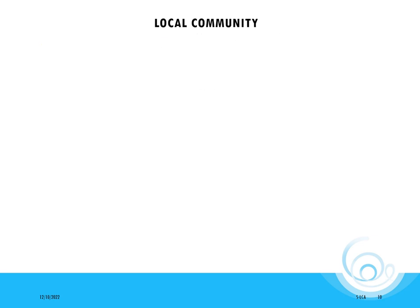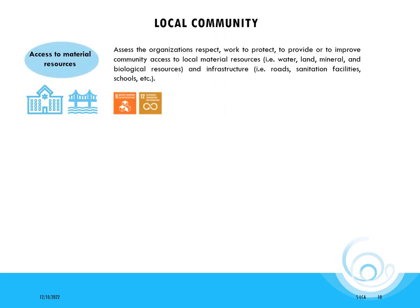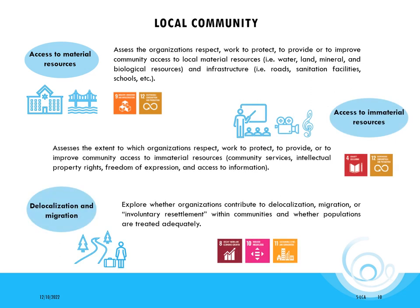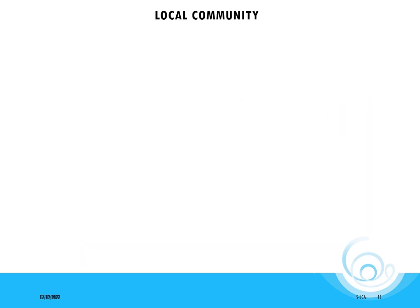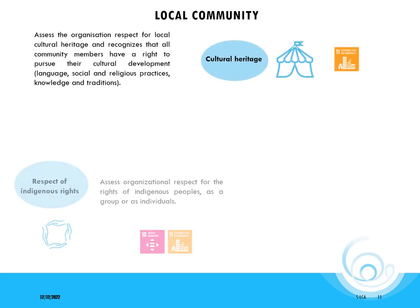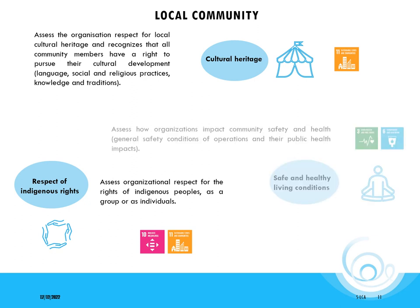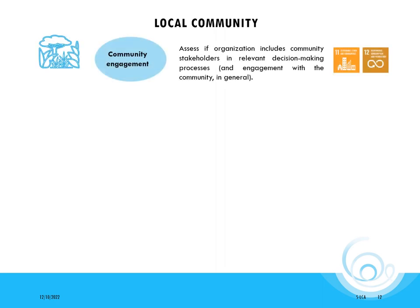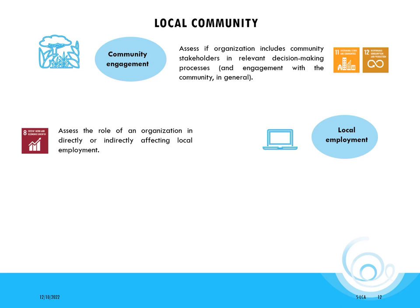We are now switching to the local community stakeholder category. It includes access to material resources, access to immaterial resources, and delocalization and immigration. Other themes included are cultural heritage, respect of indigenous rights, and safe and healthy living conditions. The last three indicators for this stakeholder group are community engagement, local employment, and secure living conditions.